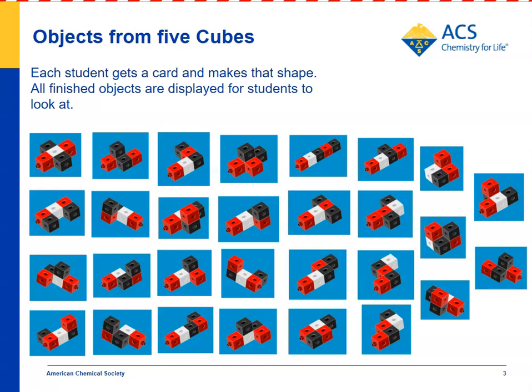There are 29 different possible combinations with five cubes — it would be extremely hard for one student or even a group of students to come up with all 29. So in this case, you can give students a card that depicts the shape they need to make. They make it with their cubes, and then you can collect all the different shapes in one place in the classroom and look at them.